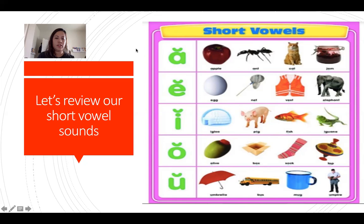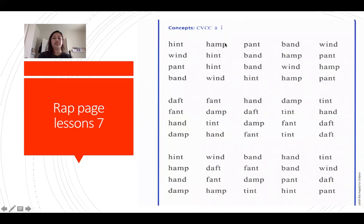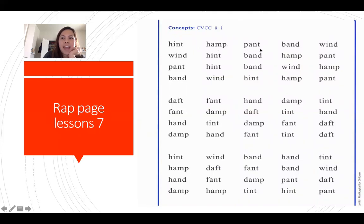The long vowel sounds are for A, E, I, O, U. The short sounds are 'a, e, i, o, uh' — long and short. Now let's read our word page from lesson seven. I'll read the top row and the middle row. Ready? Hint, hemp, pant, band, wind, daft, fan, hand, damp, tint.